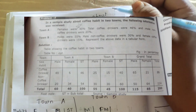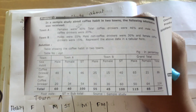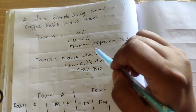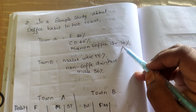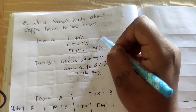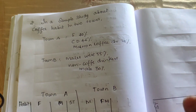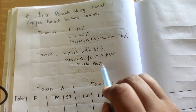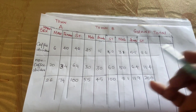Next, we have a sample study to conduct. The study is about coffee drinking habits of females. 40% of females are coffee drinkers, 46% overall are coffee drinkers, and male non-coffee drinkers are 20%. We need to make a table to organize this data.